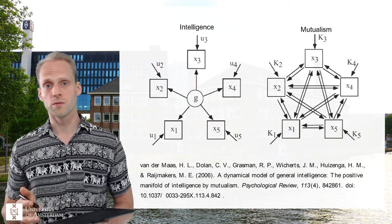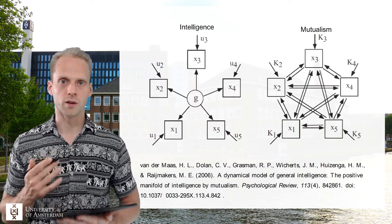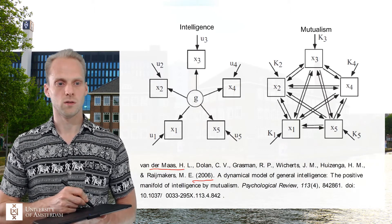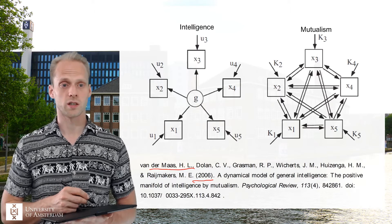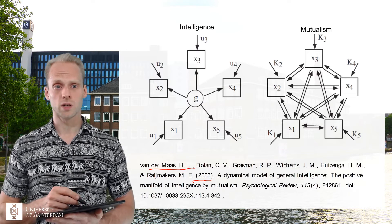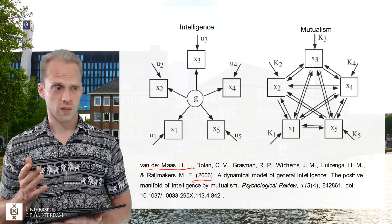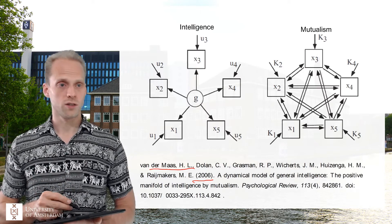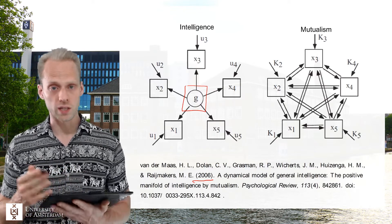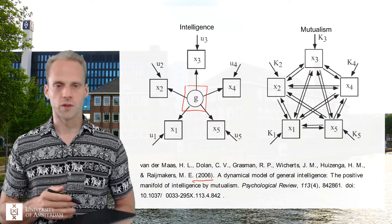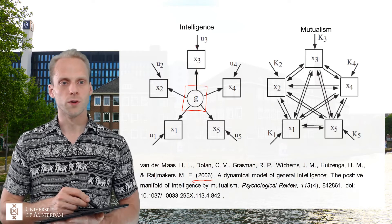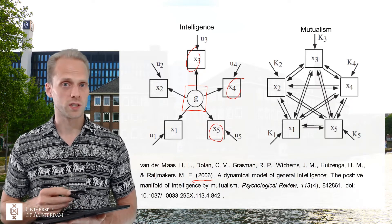This brings us back to what I consider the very first paper in network psychometrics: a paper from 2006 by Hans van der Maas, who is also working with us in the Psychological Methods Group. What Hans van der Maas did is he took an ecology analogy to general intelligence. The g-factor has been used for quite a long time to explain covariation between cognitive tests. And then Hans van der Maas talked with ecologists and asked them about positive correlations — the positive manifold.